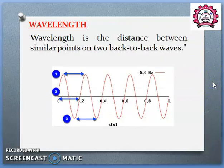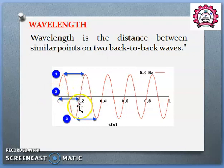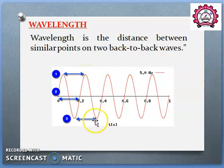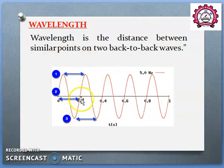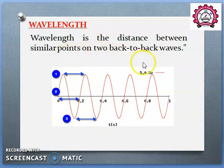The next term is wavelength. Wavelength is the distance between similar points on two back-to-back waves. There are three ways we can calculate wavelength: at the zero level, at the positive high points, and at the negative level. The distance between those similar points — whether measured at zero crossing, positive peak, or negative peak — remains the same, for example 0.2. That distance is called wavelength.